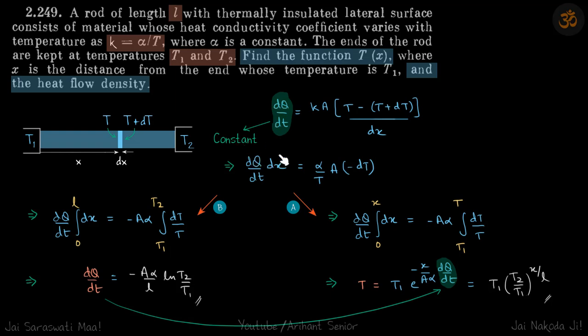Since dQ/dt is a constant, we have only two terms of variables: x and temperature. Now we can integrate. First, our integration will be from zero to L, where temperature changes from T1 to T2. We do that and get dQ/dt—that is the heat flow density.